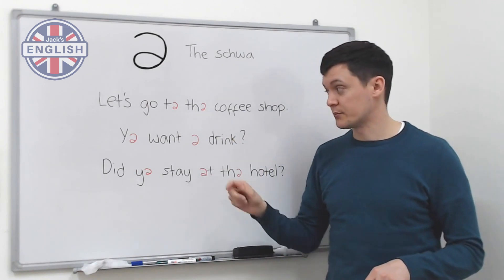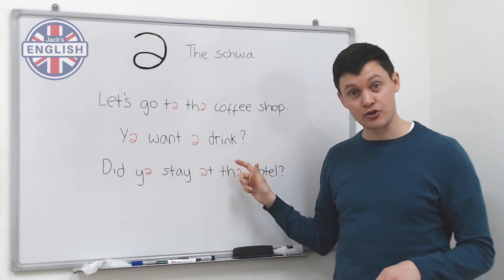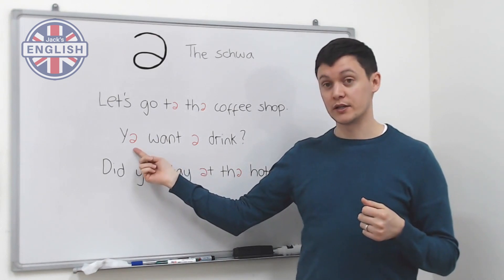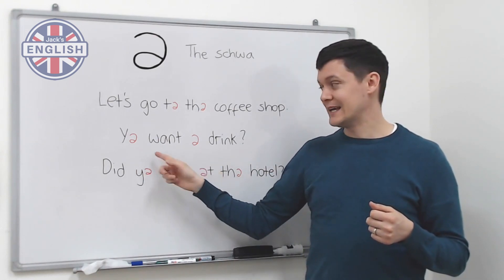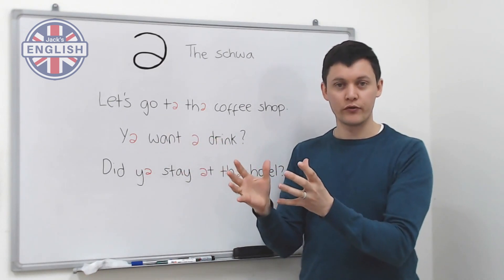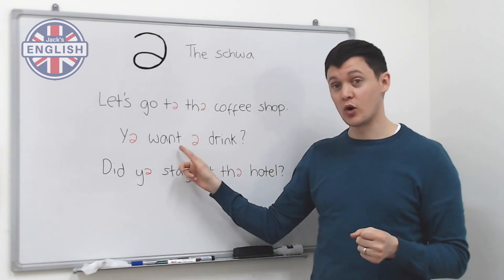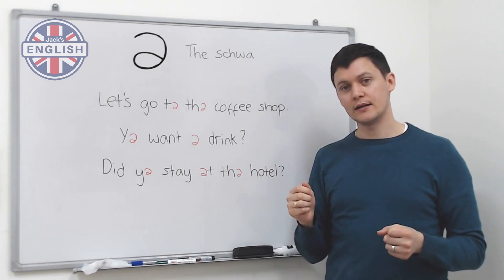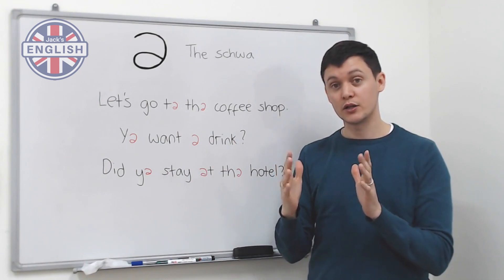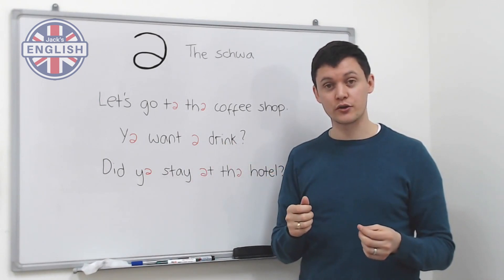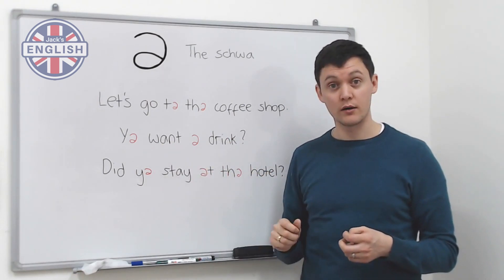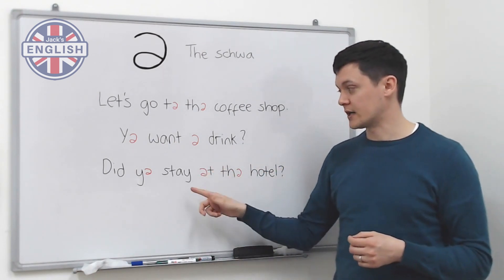Number two: 'You want a drink?' Again, very difficult to say when fully stressed. Native speakers reduce 'you' to a schwa — 'you' is not stressed because it's not the important part of the sentence. The important words are 'want' and 'drink.' So we say 'you want a drink?' Some people even make 'want a' into 'wanna' — 'you wanna drink?' Try to listen to natives ask that kind of question and you'll catch the schwa very often.